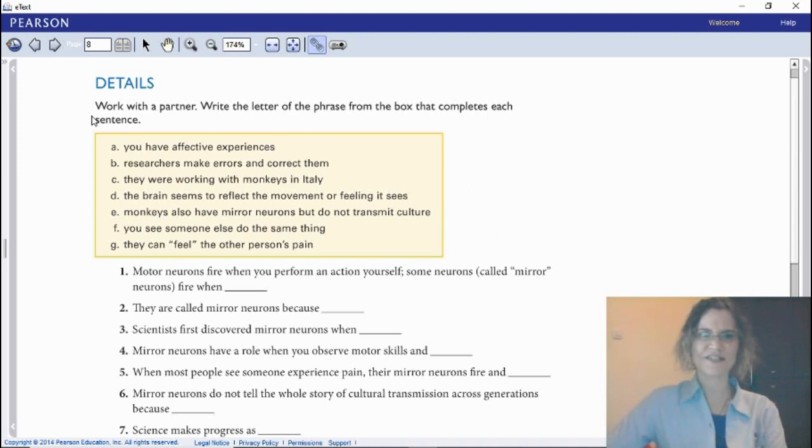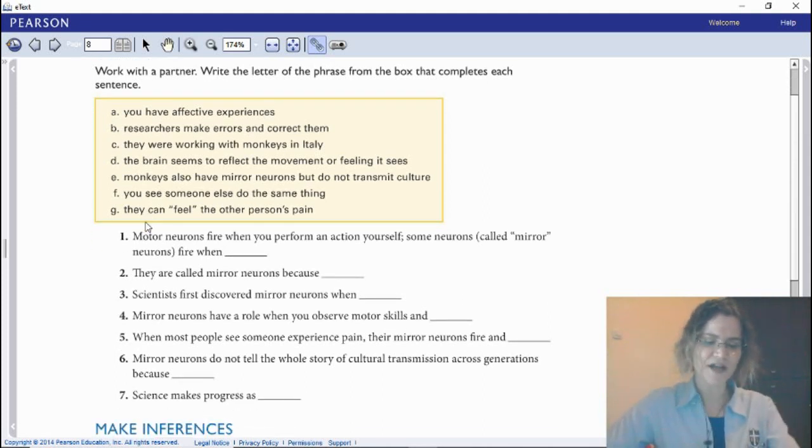We continue with the next part, which is details. As you all remember from the last two years, the details are more specific points, more specific facts that help develop a main point, a main point that helps develop a main idea. Now, write the letter of the phrase from the box that completes each sentence. So you're going to complete the sentences number one until seven, but you gotta complete it with the other part of the sentence. Which one is the correct one? Pause your video to answer these questions.